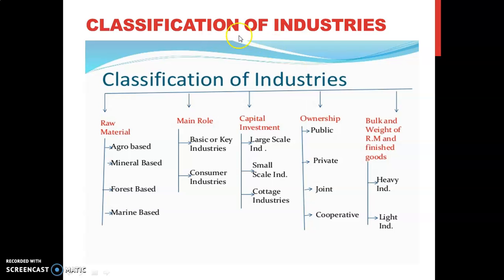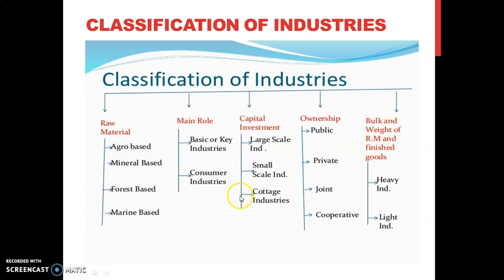Next is classification of industries. Industries are classified on the basis of raw material, main role, capital investment, ownership, and bulk and weight of raw material and finished goods. We will discuss all these types in the next slide.